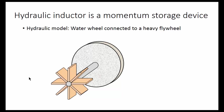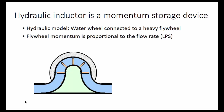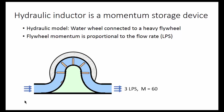A hydraulic inductor is a water wheel connected through a rigid axle to a heavy stone flywheel. When water flows from left to right, it's directed in a clockwise direction. Here I've drawn the same thing in a cross-section side view. The flywheel momentum is proportional to the flow rate in liters per second. For example, 1 liter per second gives 20 momentum units, 2 liters per second gives 40 momentum units, and 3 liters per second gives 60 momentum units.